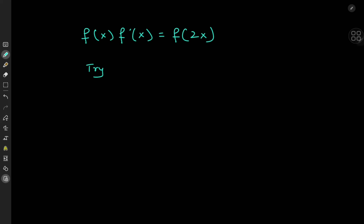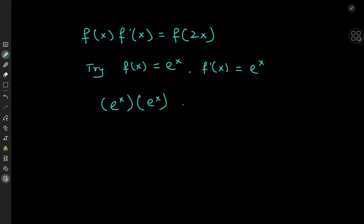Let's first try the no-brainer solution. We try the function f(x) defined as the exponential function e to the x, because in that case the derivative f prime equals e to the x again. So we take the function e to the x and multiply it by its derivative e to the x, and we get e to the 2x, which is indeed f of 2x as per our definition. So the no-brainer works.